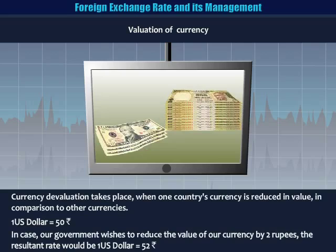Currency devaluation takes place when one country's currency is reduced in value in comparison to other currencies. After currency devaluation, a greater quantity of the same currency is required in order to purchase the same amount of other currencies. For example, as of date one US dollar is equal to 50 rupees. In case our government wishes to reduce the value of our currency by two rupees, the resultant rate would be 1 US dollar equal to 52 rupees. Initially one US dollar could be purchased by shelling out 50 rupees, but post devaluation the same could be procured by shelling out 52 Indian rupees, thus the dollar has become expensive by two rupees.